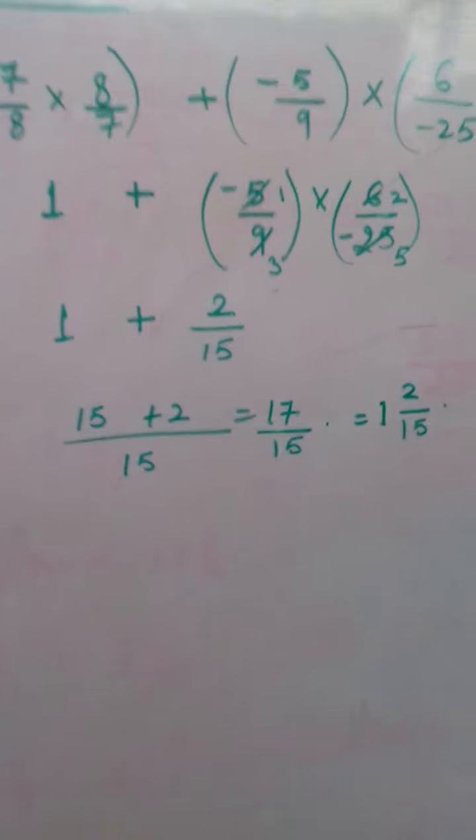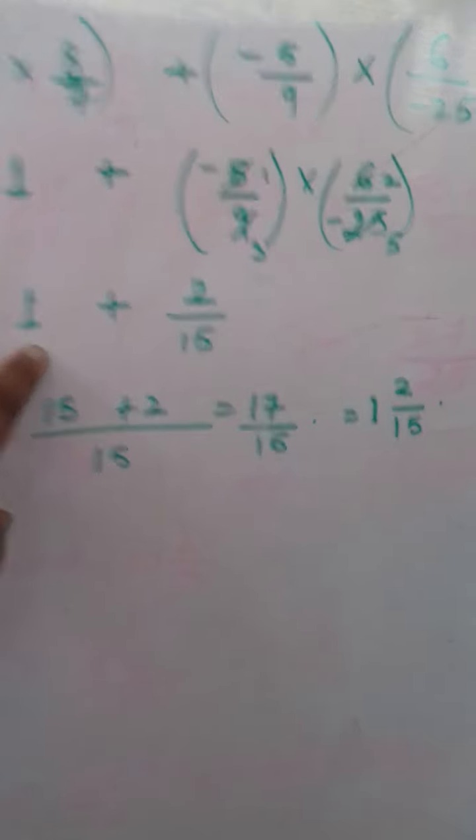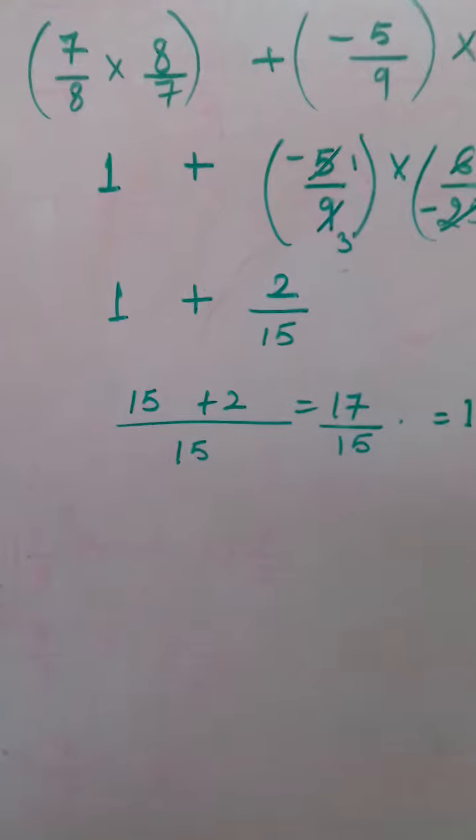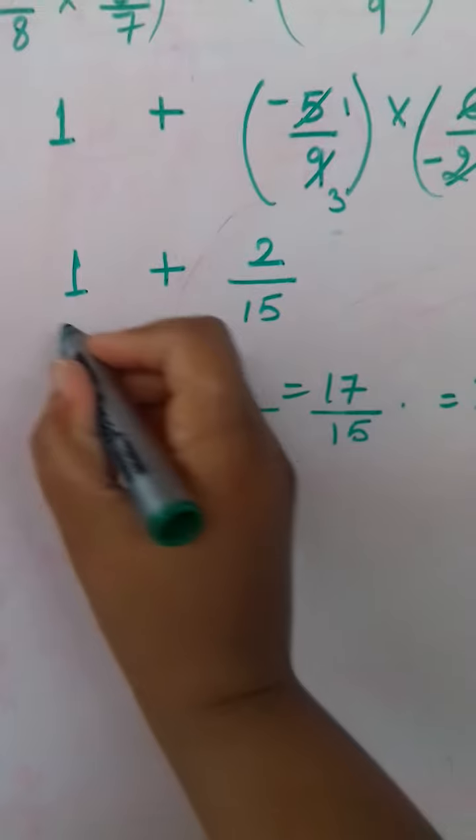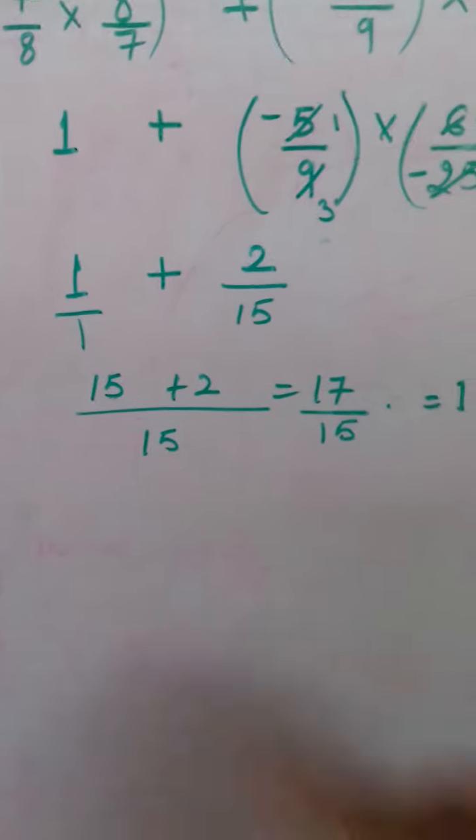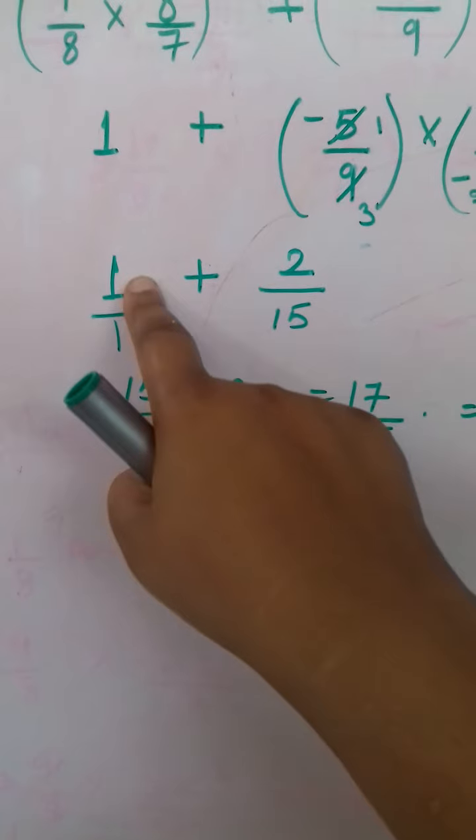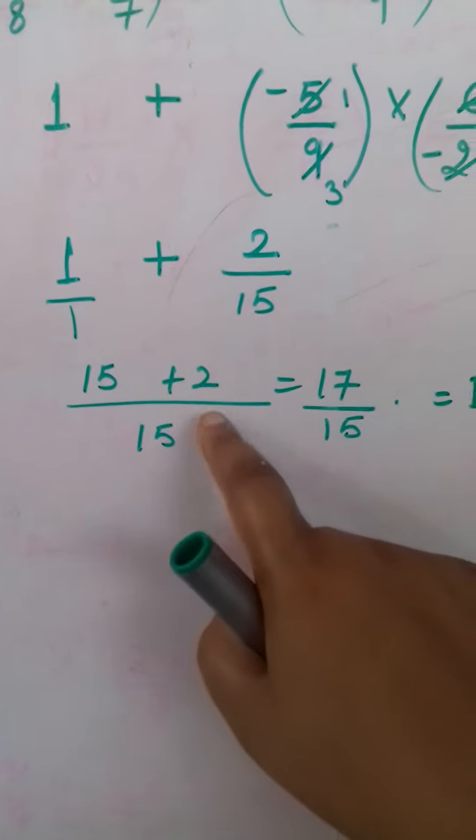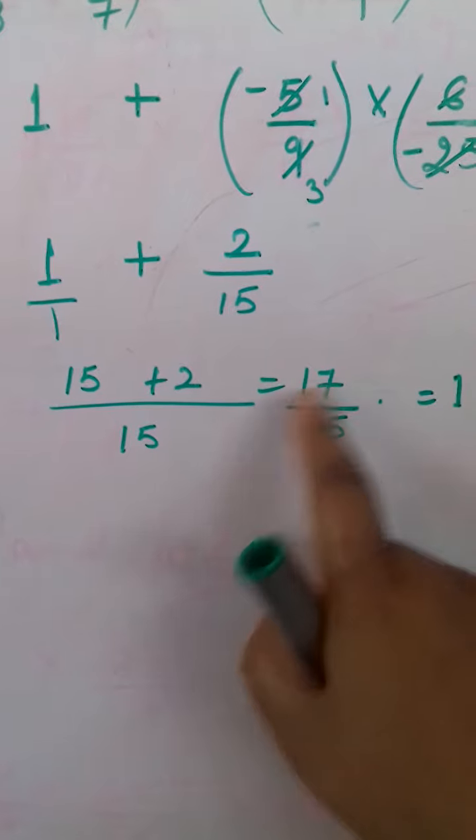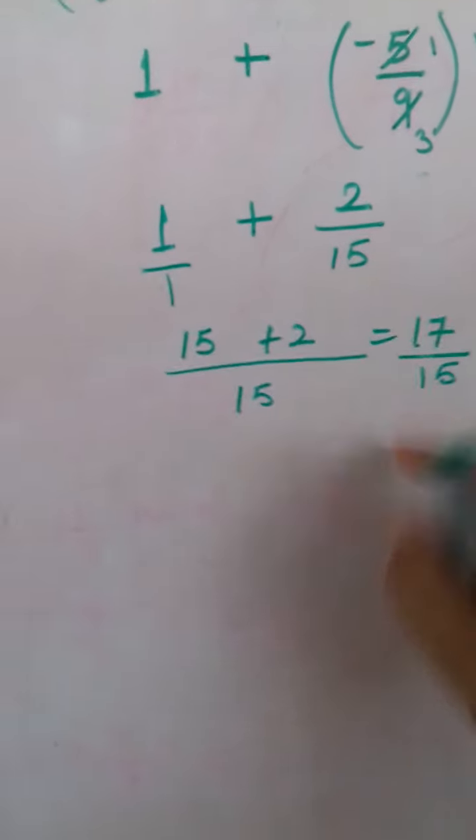Now when nothing is here in the denominator, take it as 1. So the LCM of 15 and 1 is 15. Now 15 ones are 15 and 2 here. Now 15 plus 2, 17 upon 15, understood?